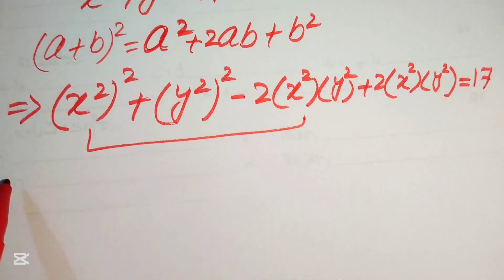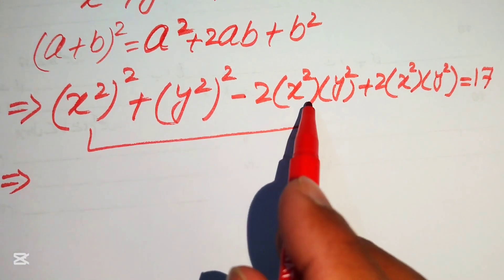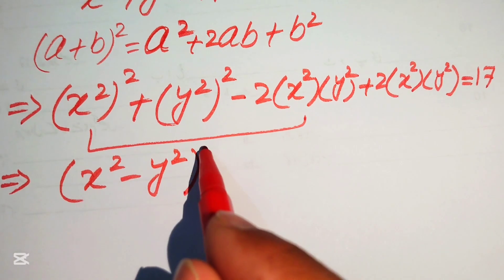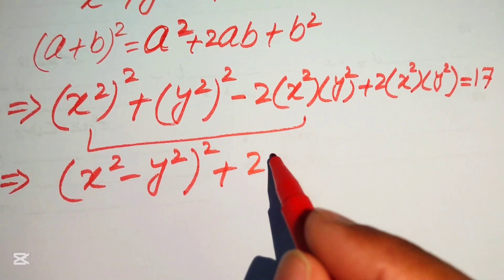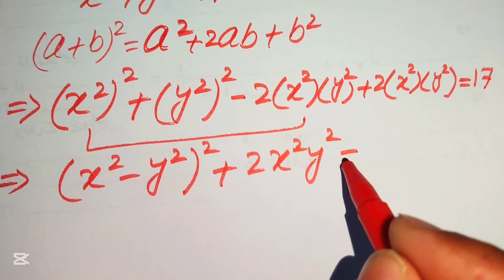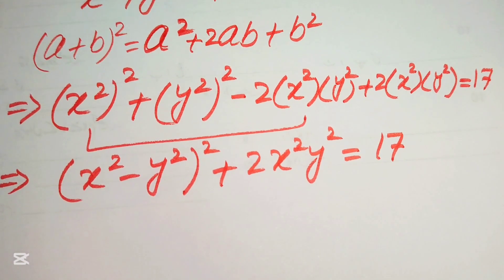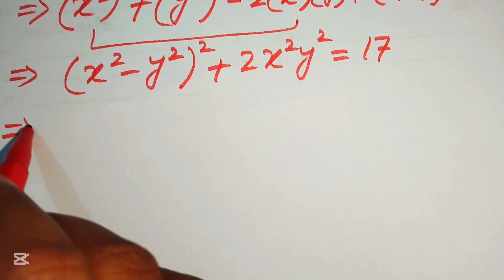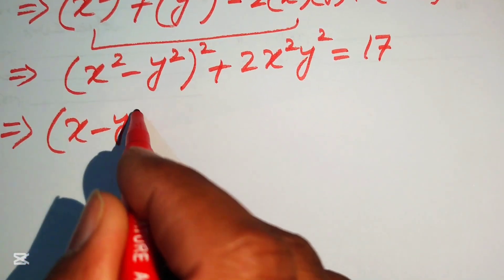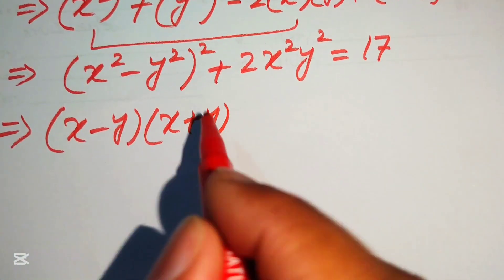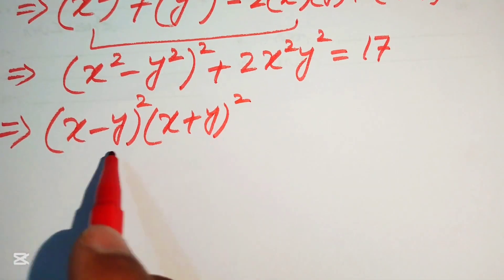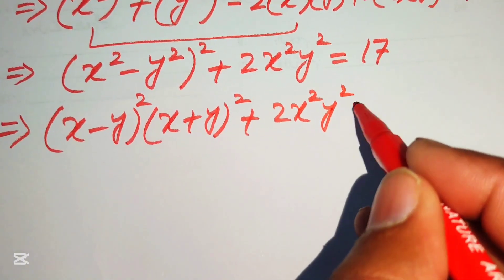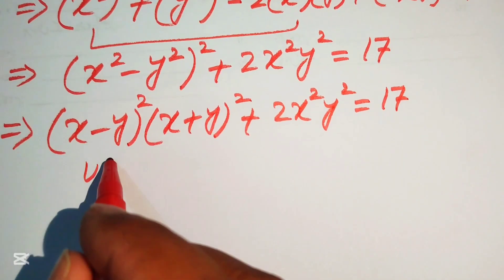Focusing on the first three terms — a² + b² − 2ab — we recognize the pattern (a−b)². So those terms become (x² − y²)², plus 2x²y² = 17. We then apply the algebraic identity x² − y² = (x−y)(x+y), writing it as [(x−y)(x+y)]² + 2x²y² = 17.